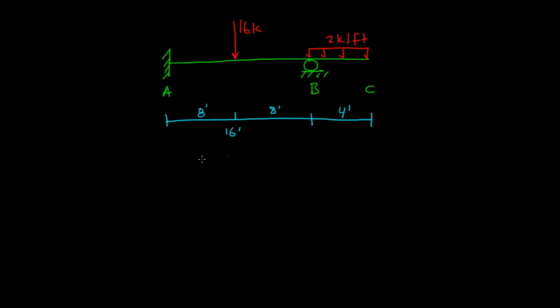Now our equation for slope deflection is M_ij equals 2EI over L times (2θ_i plus θ_j minus 3ψ_ij) plus the fixed end moment.